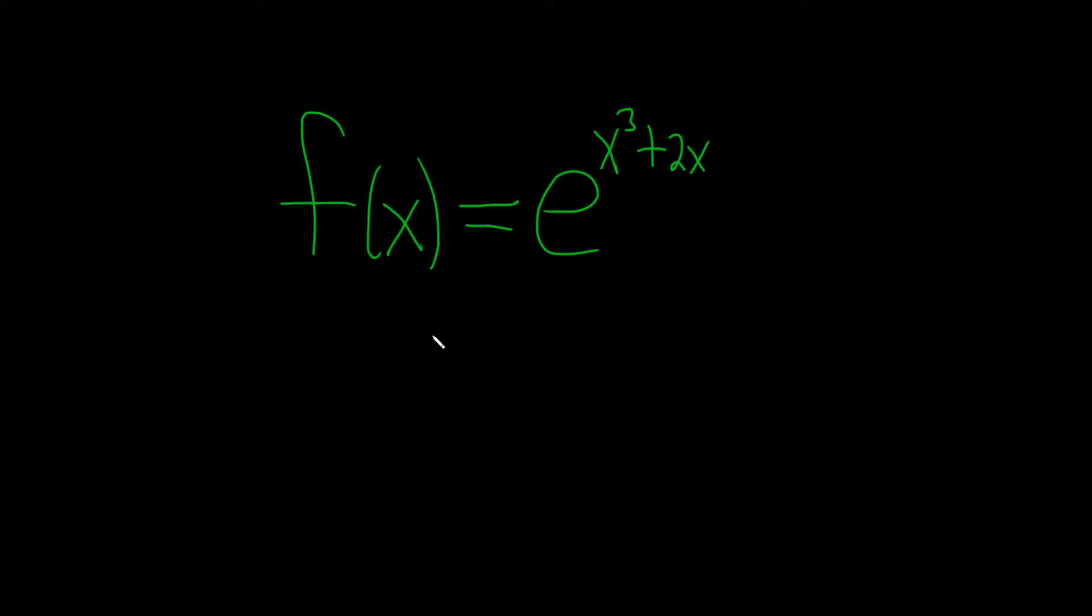So the idea here is we're going to use the chain rule. So when we take the derivative of this function, well, the derivative of the outside is just e to the x, or it's e to the whatever's up here. So this is the inside piece. So you take the derivative of the outside, you leave the inside untouched, and then times the derivative of the inside. That's the chain rule.